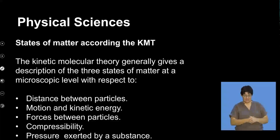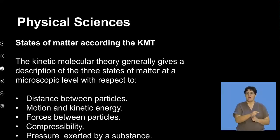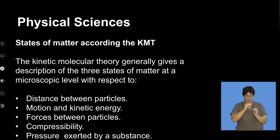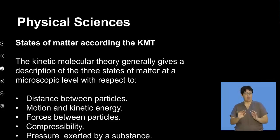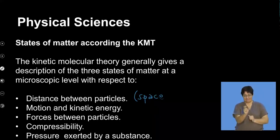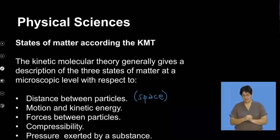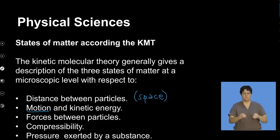As we saw in the second segment when we looked at the simulation involving a fixed mass of a gas being heated, the form of matter which was a gas is composed of particles, and these particles are in a constant state of motion. With respect to the kinetic molecular theory, we can look at the distance — the spaces between particles — which is something specific to KMT across the three different states of matter.